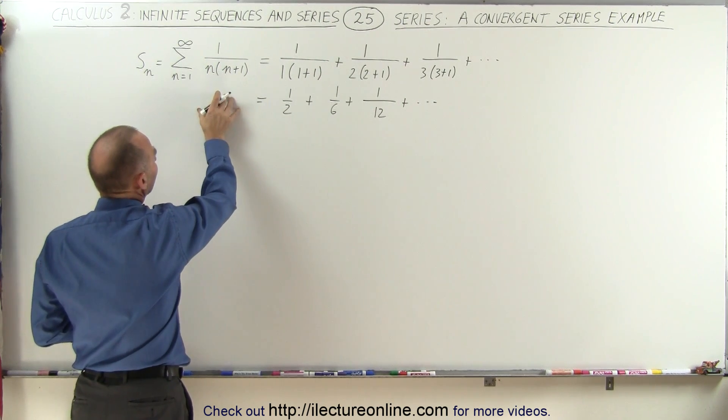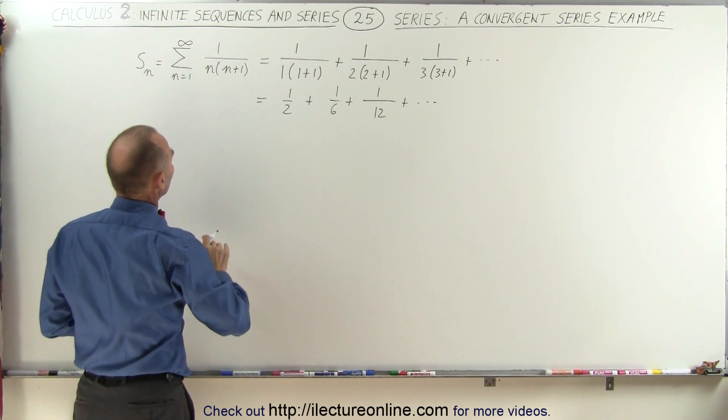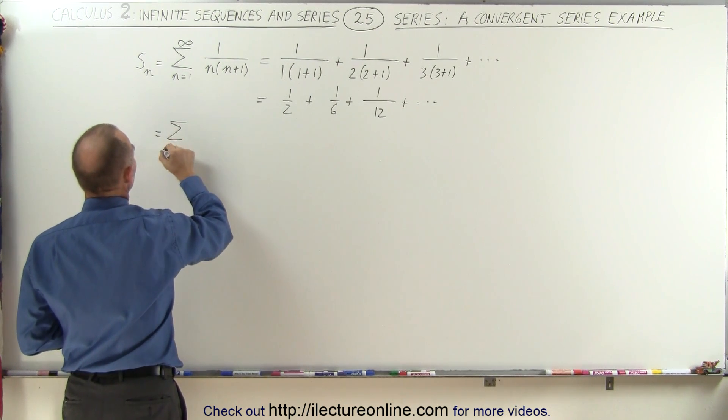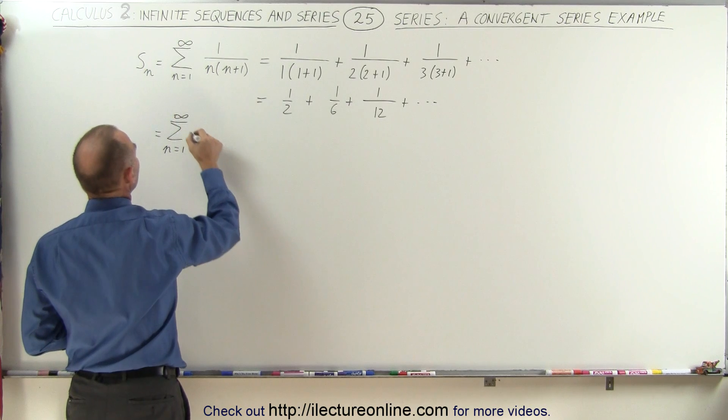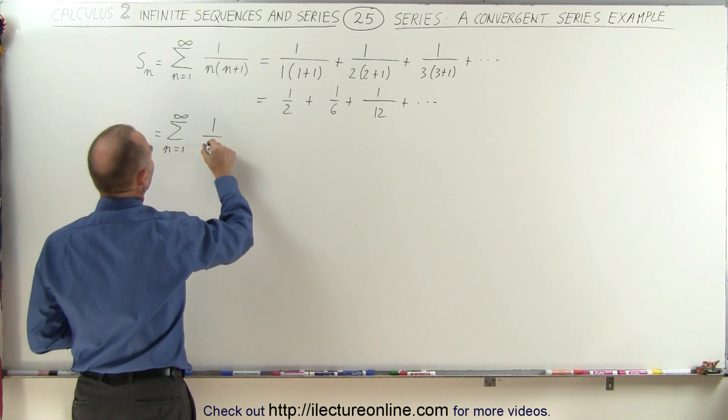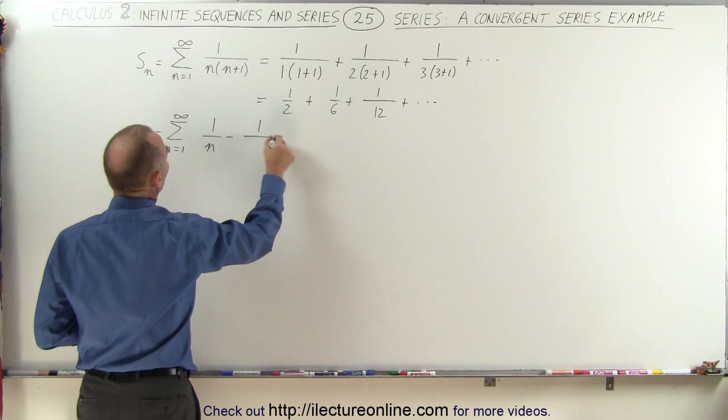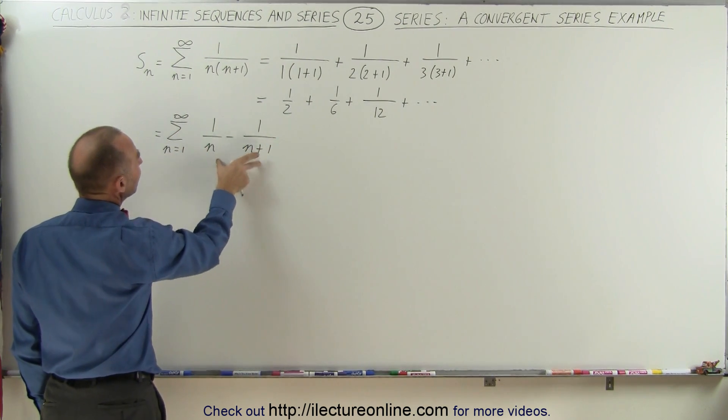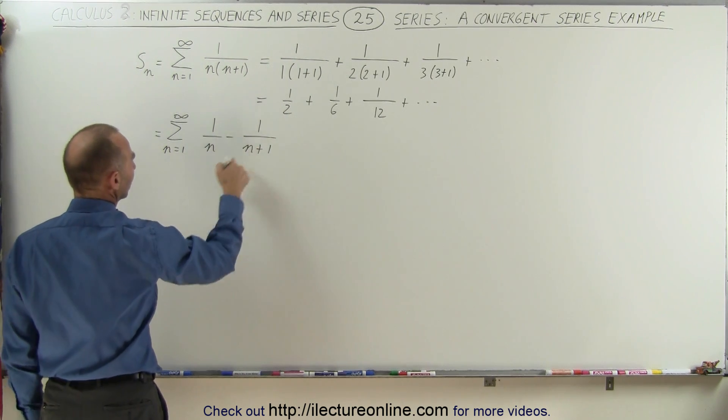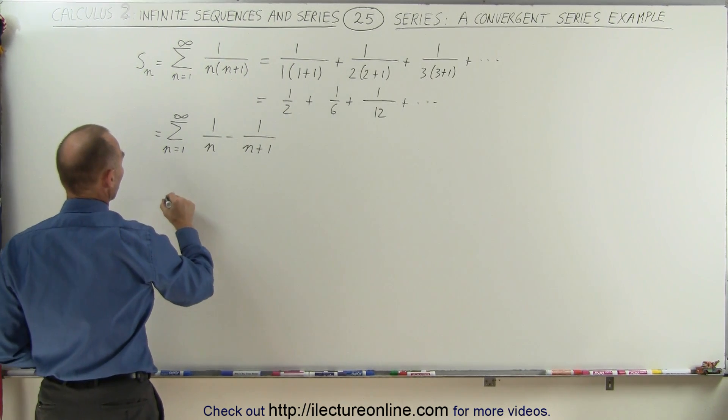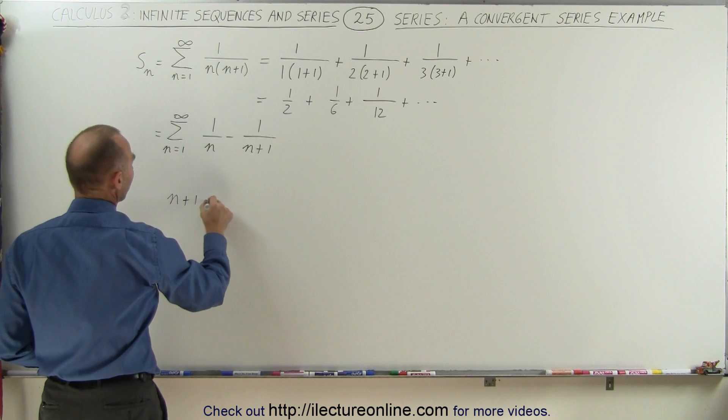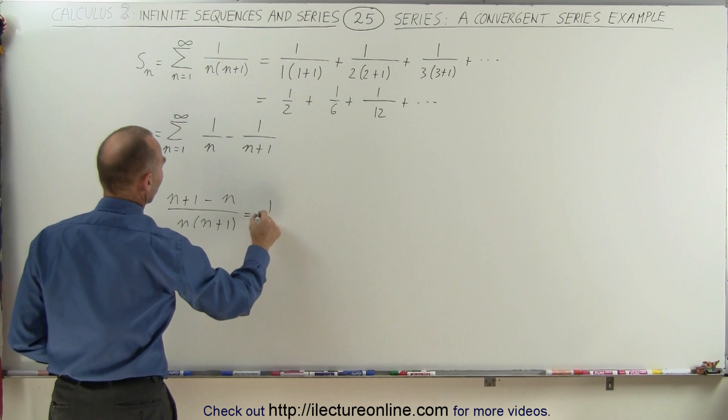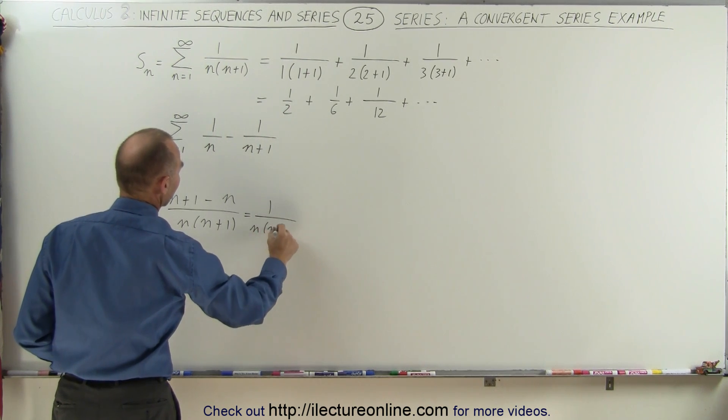We can write this as a sum of partial fractions. So this can be written as the sum from n equals 1 to infinity of 1 divided by n minus 1 over n plus 1. So if you want to see if this indeed equals this, we can say that if we cross multiply and write over a common denominator, we get n plus 1 minus n divided by n times n plus 1, this is equal to 1 divided by n times n plus 1.